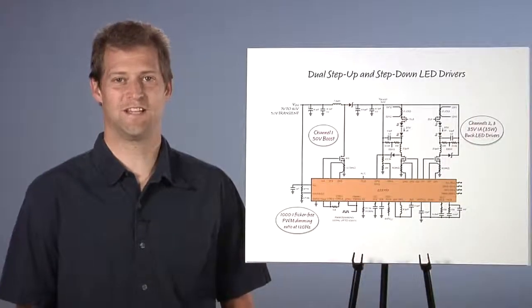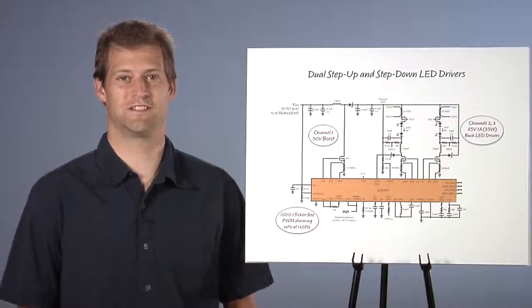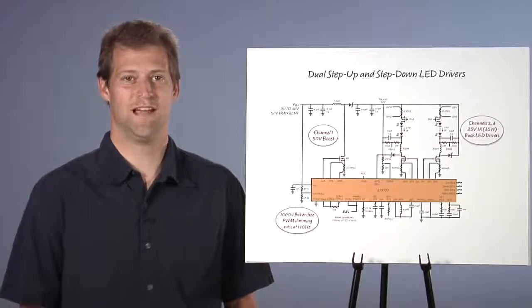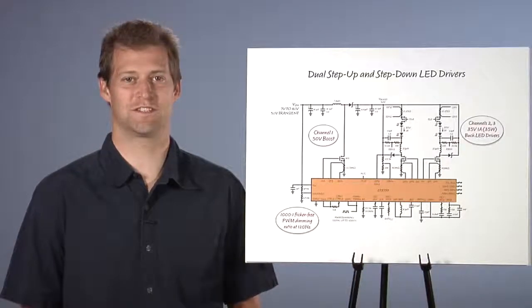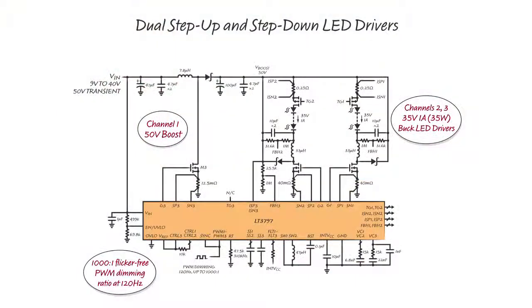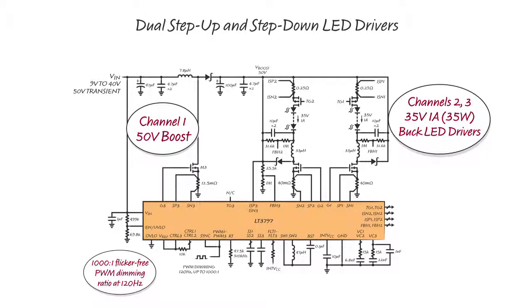Sometimes, it is advantageous to use one of the three channels as a pre-boost and the other two channels as high-bandwidth buck-mode regulators. This offers the advantage of step-up and step-down capability with high PWM dimming ratios and low input and output ripple for low EMI.